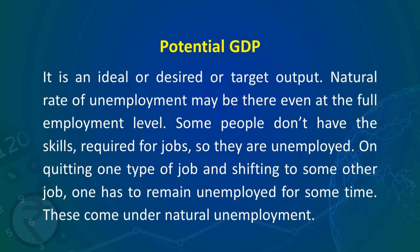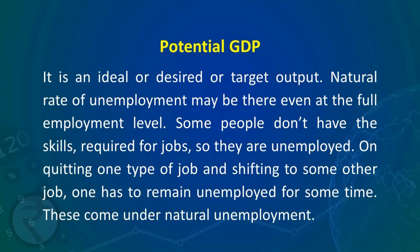Potential GDP is the ideal, desired, or target output. Natural rate of unemployment may exist even at the full employment level. Natural unemployment includes people who do not have the skills required for jobs, and those who are between jobs — when quitting one type of job and shifting to another, there is a time gap during which a person remains unemployed.